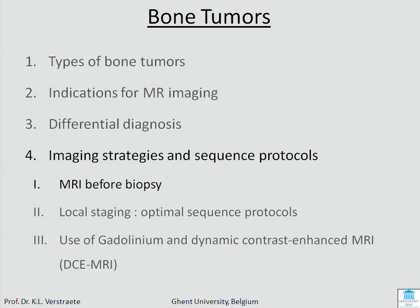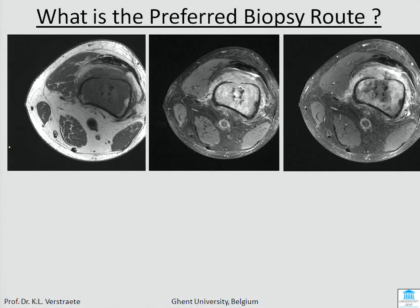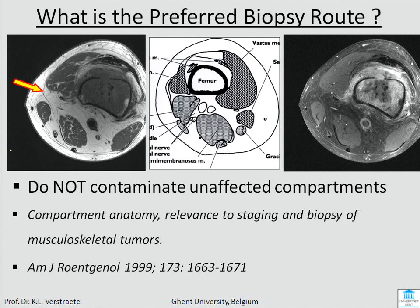So we have seen the types of bone tumors, why we need MRI and sometimes CT scan, the differential diagnosis — and now we will look at how to make images of these bone tumors. Often you will need biopsy and your colleague will ask how to approach the tumor. You should suggest a way so that unaffected compartments are not contaminated — it's not always the shortest route but the safest route.